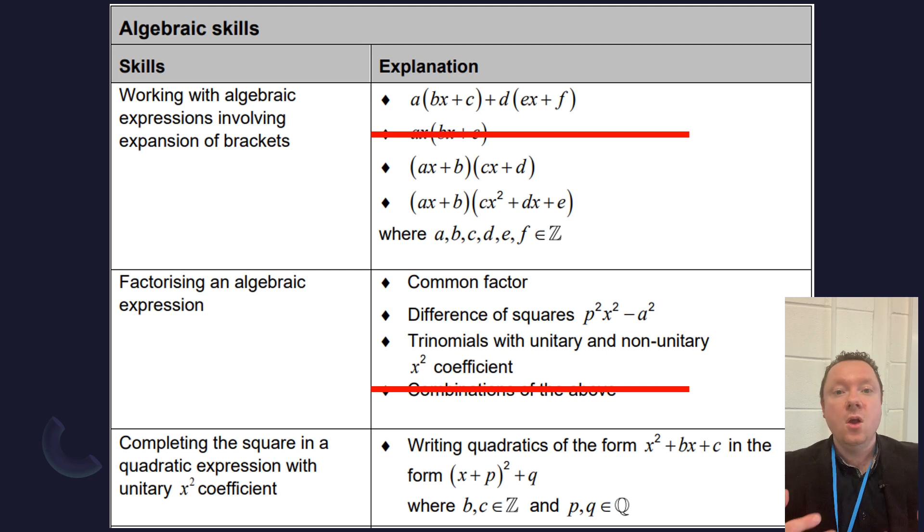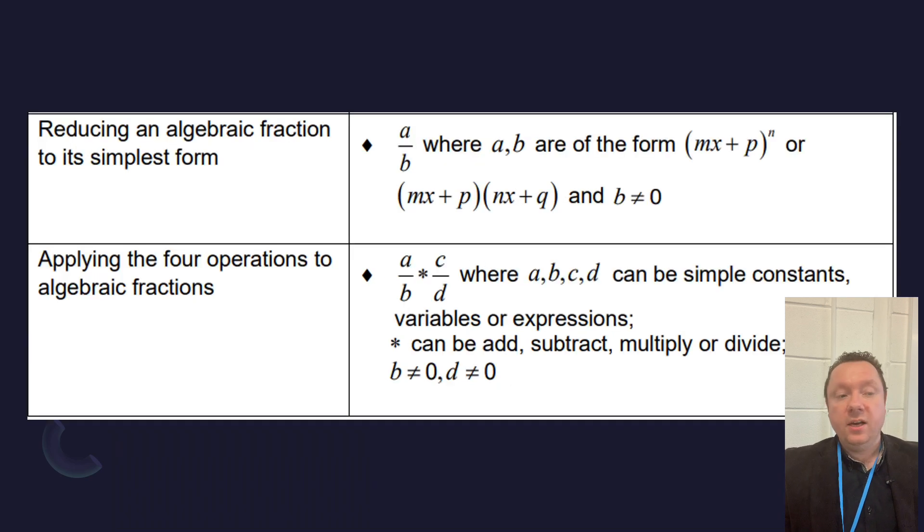Next one we've got is combinations of factorizing. So you'll still get asked to do all your factorizing: common factor, difference of two squares, trinomials. But you won't get asked to do a question with a combination of all them in at once. Reducing algebraic fractions to its simplest form is still in. Applying the four operations to algebraic fractions, that's in too.